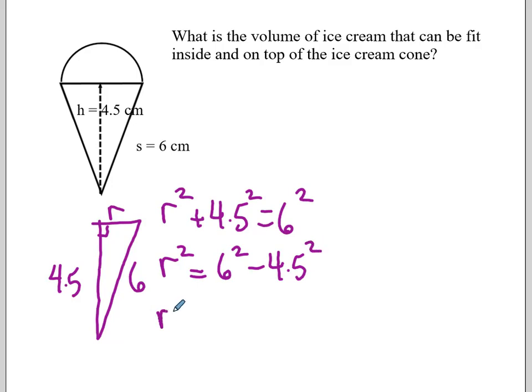You must do the squaring first. So 6 squared minus 4.5 squared equals 15.75. And if I square root that, I get a radius of 3.96. So I'm going to just say that's 4 centimeters.